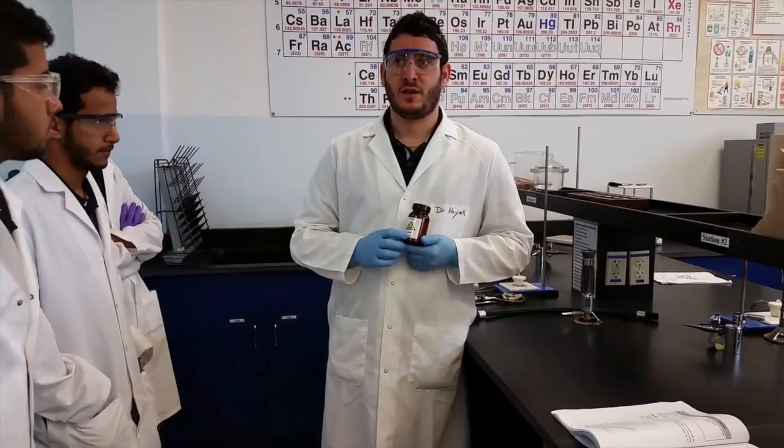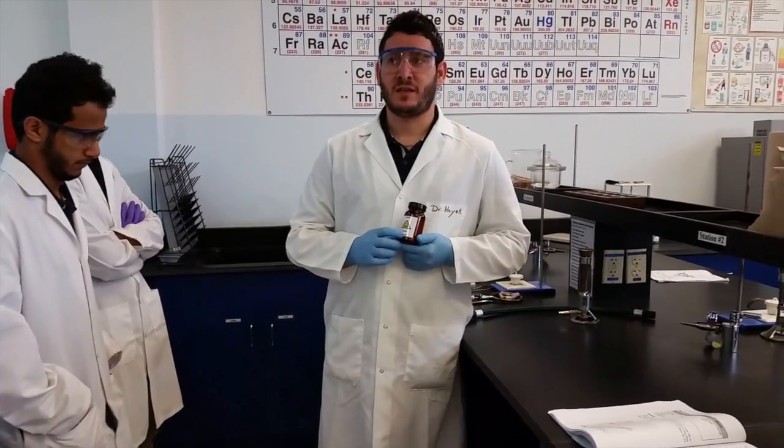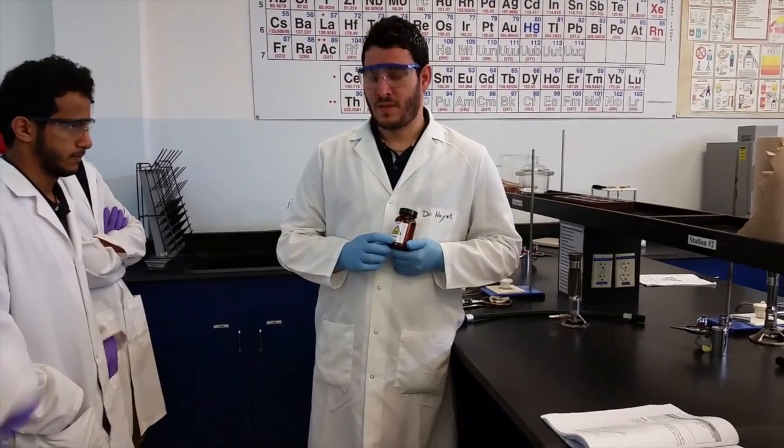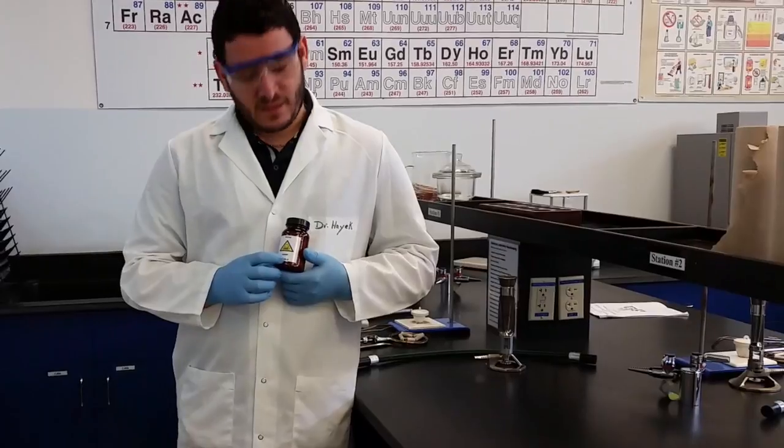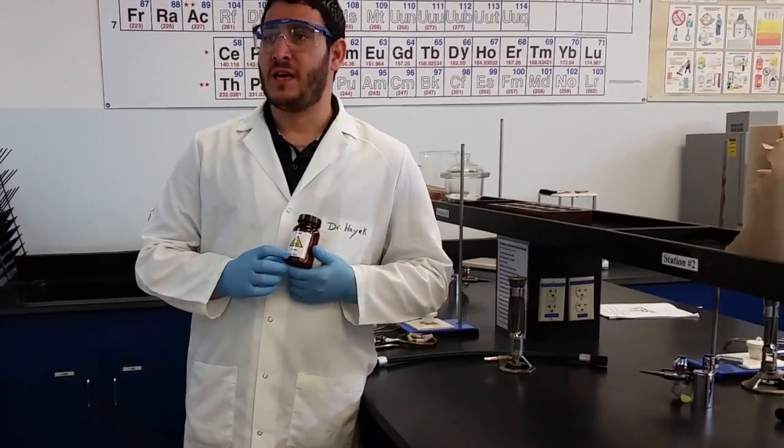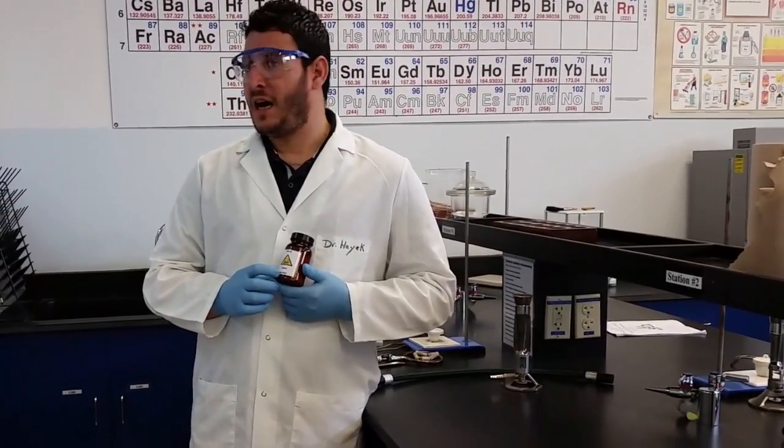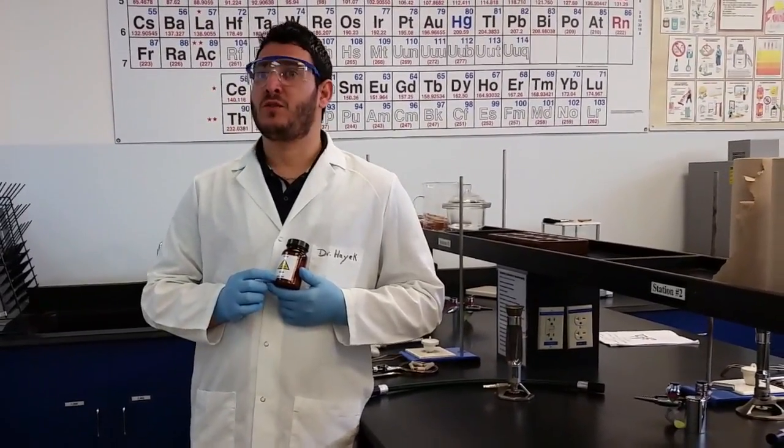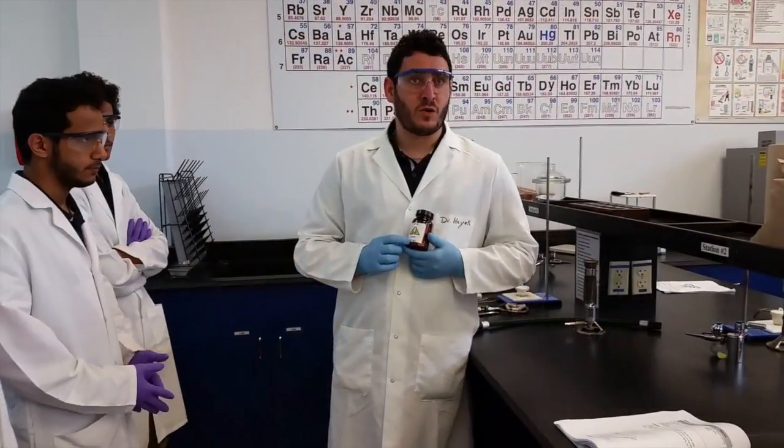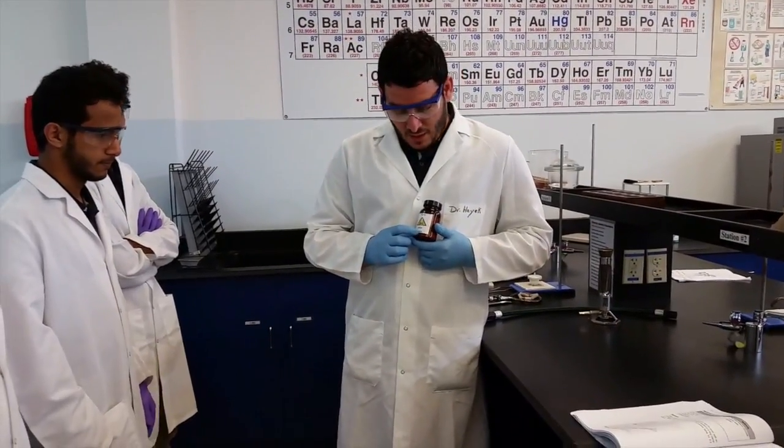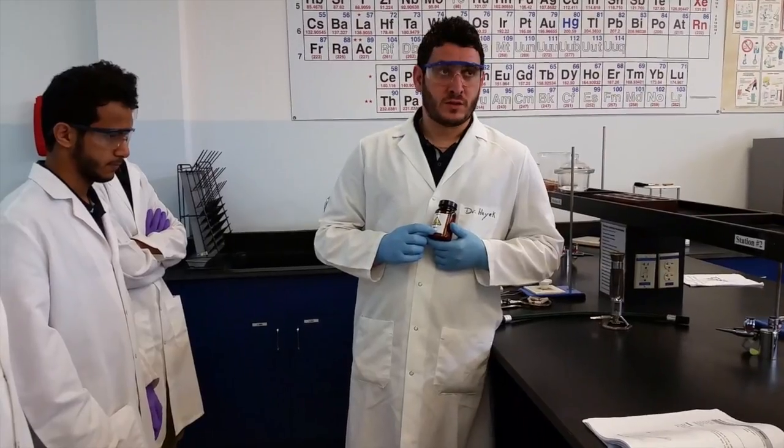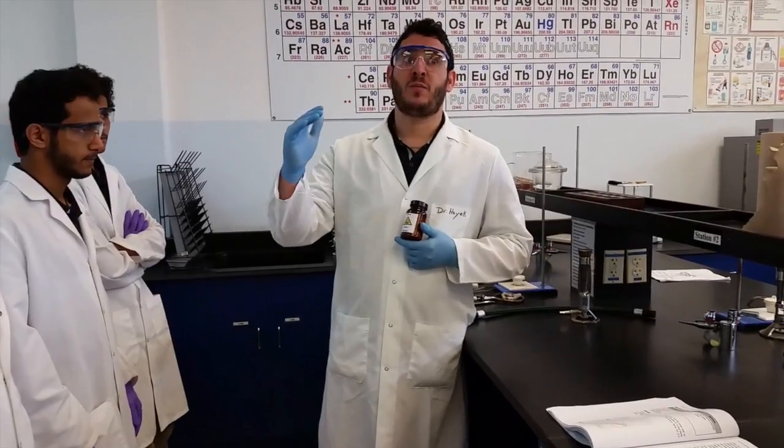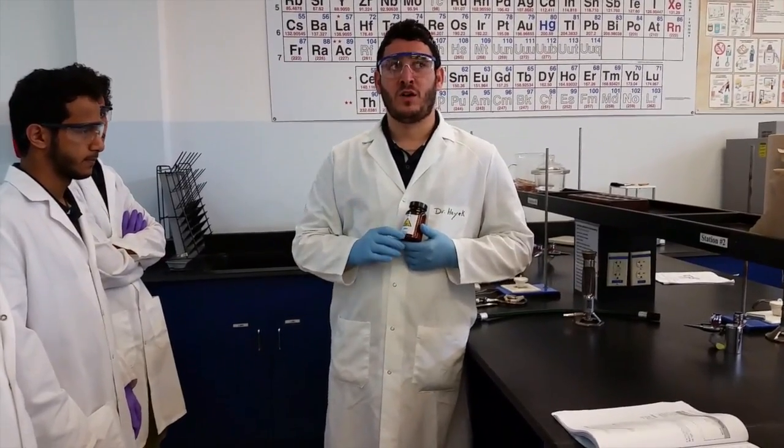To determine X, X is the number of moles of the anhydrous - the salt alone without water, which in this case is barium chloride. You need to know the number of moles of barium chloride and the number of moles of water, because X equals number of moles of water divided by number of moles of barium chloride.